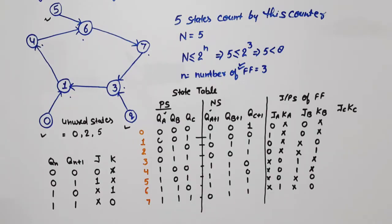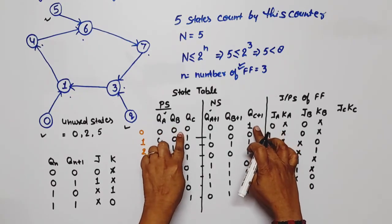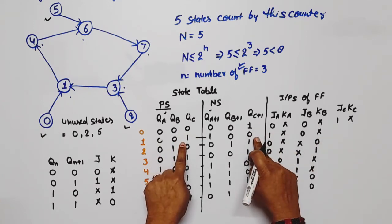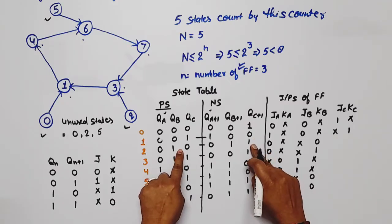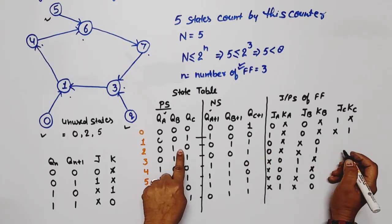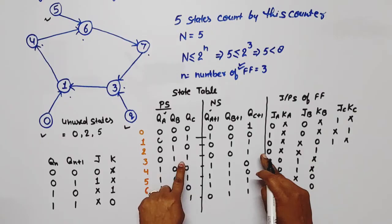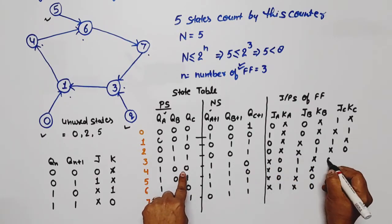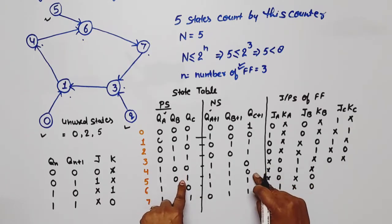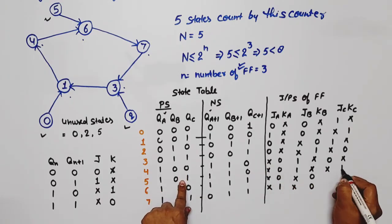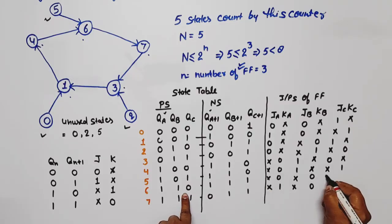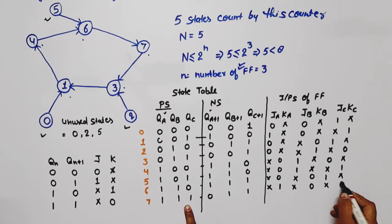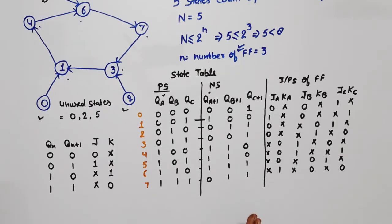So this is the complete state table for the given diagram. Now, on the basis of this, we will derive the equations. The equation for JA is: summation of minterms where value is 1 — that's at 4, 5, 6, and 7. For KA: single minterm at 7, plus don't care at 0, 1, 2, 3.